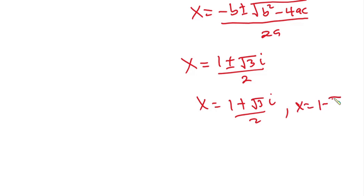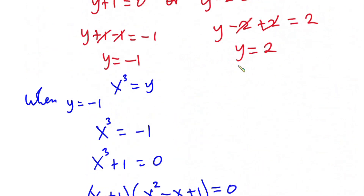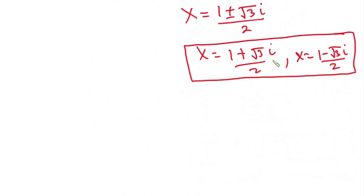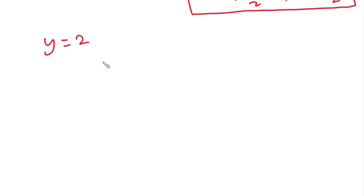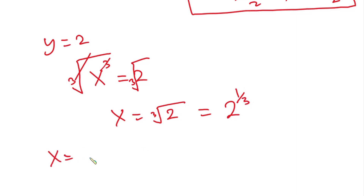These roots are complex so we are not considering them. Now for the case when y equals 2: x cubed equals 2. Taking the cube root of both sides, x equals the cube root of 2, which is the same as 2 to the power one third. So the solutions so far are x equals negative 1 or x equals 2 to the power one third.